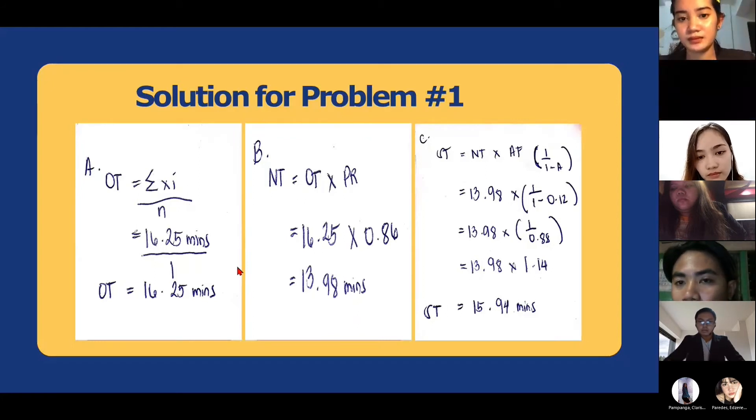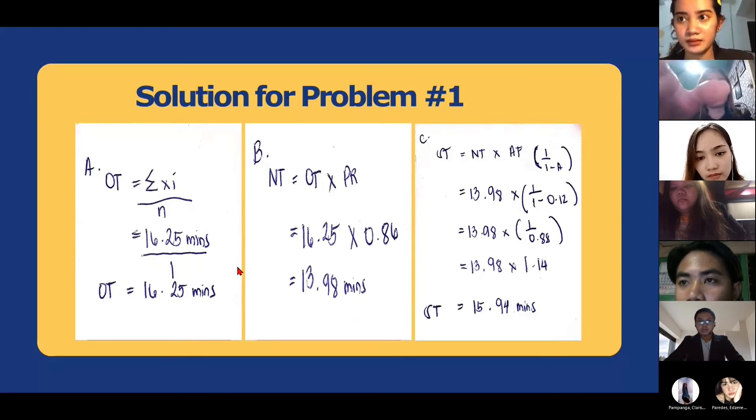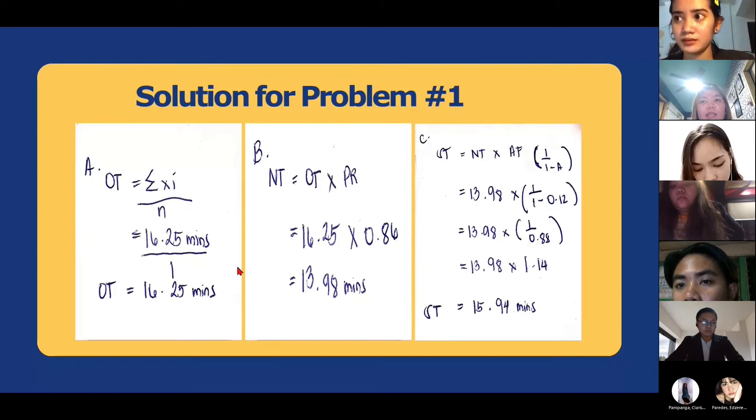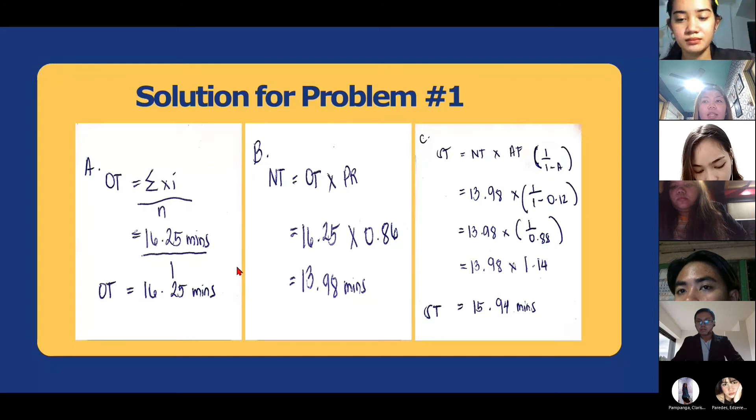Letter B. Normal time equals observed time multiplied by performance rating. 16.25 times 0.86 equals 13.98 minutes.